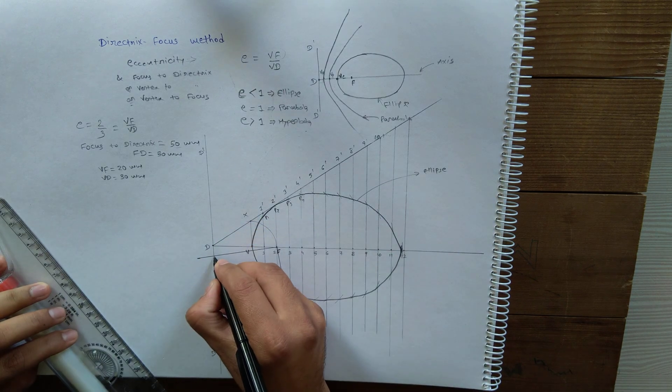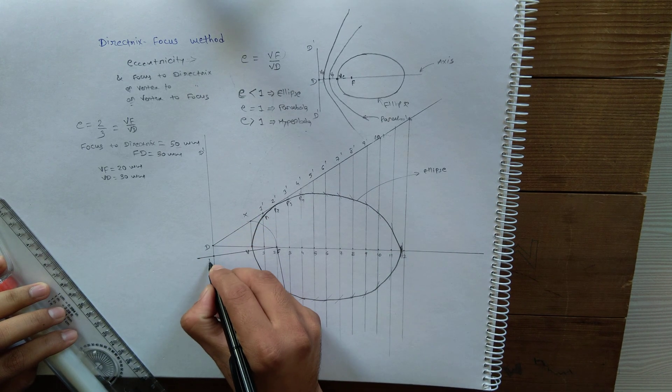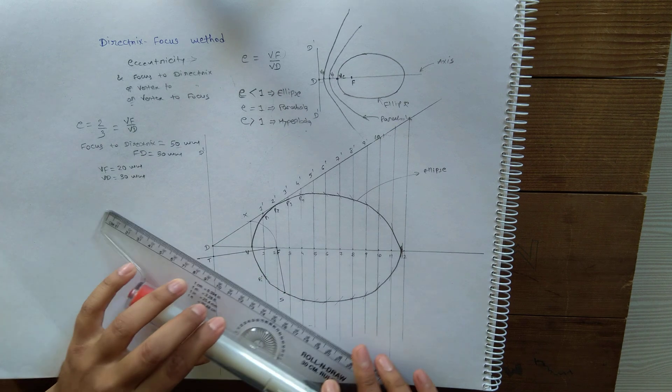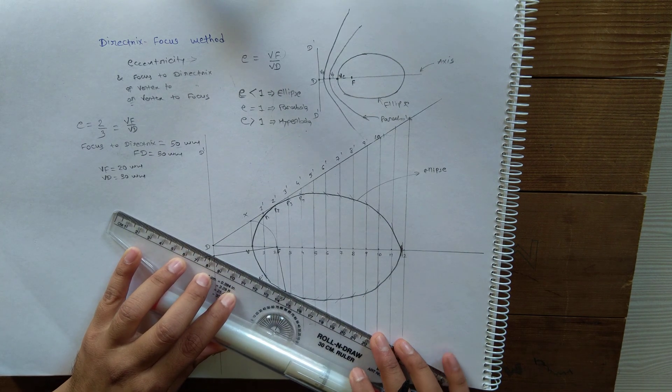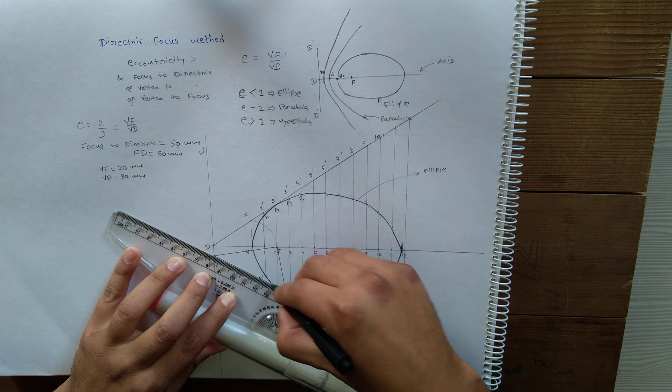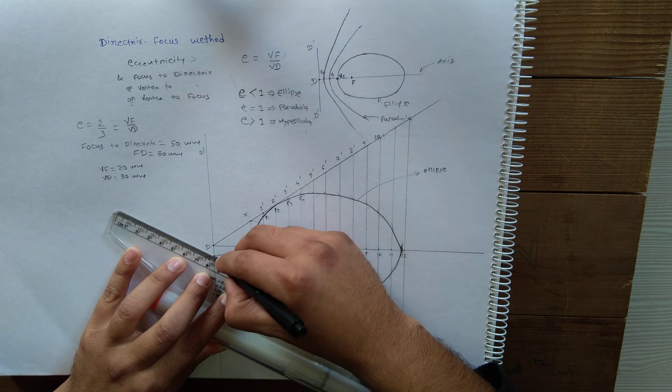This line will intersect the directrix at one point. Call this point T. If you join T and S, you will get the tangent.